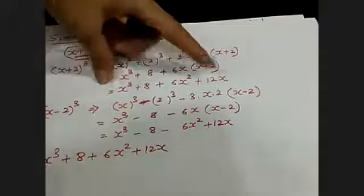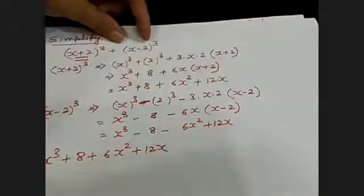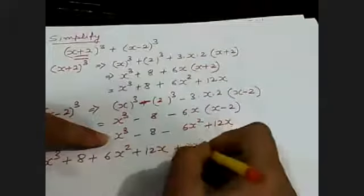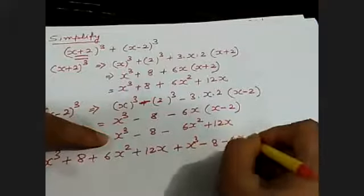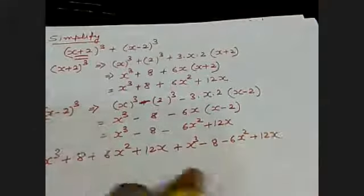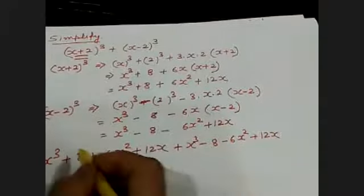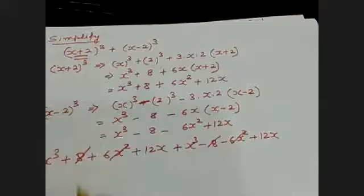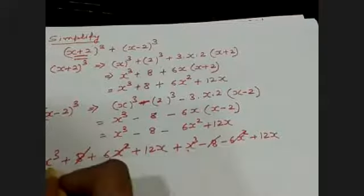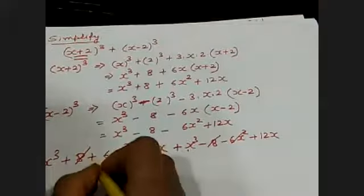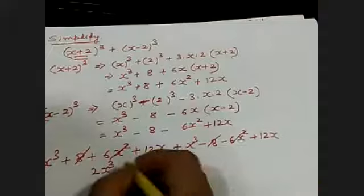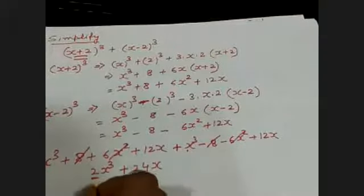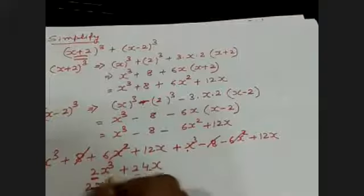In between x plus 2 whole cube and x minus 2 whole cube, a plus sign is given. So when you add them: x cube plus 8 plus 6x squared plus 12x, plus x cube minus 8 minus 6x squared plus 12x. Plus 8 cancels with minus 8, and plus 6x squared cancels with minus 6x squared. What remains is x cube plus x cube equals 2x cube, and 12x plus 12x equals 24x.